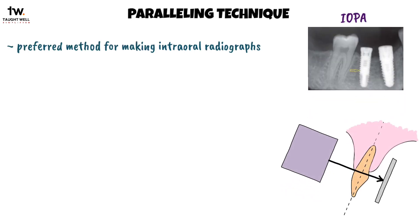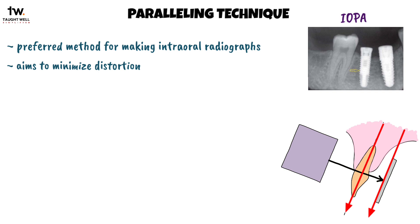The paralleling technique is the preferred method for making intraoral radiographs. This technique aims to minimize distortion by placing the image receptor parallel to the long axis of the tooth and directing the central X-ray beam perpendicular to both the long axis of the tooth and the receptor.